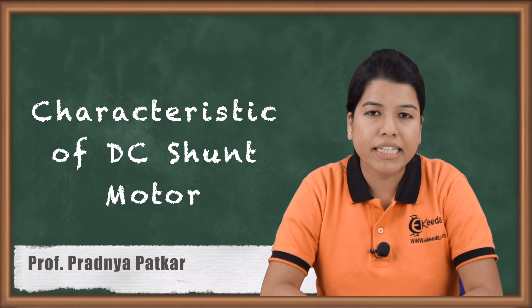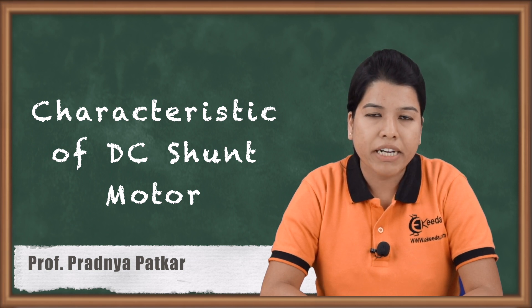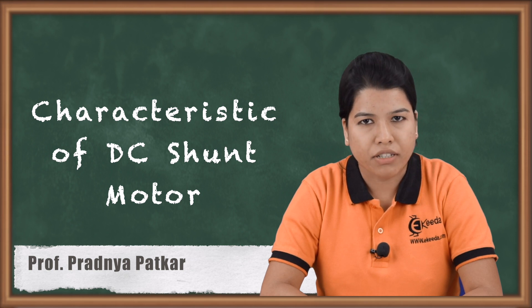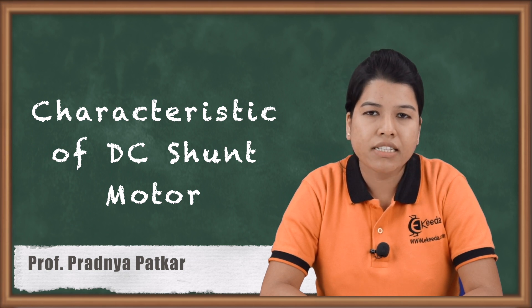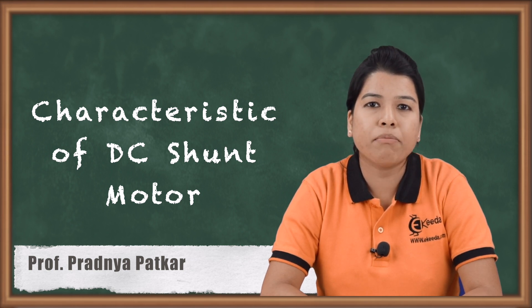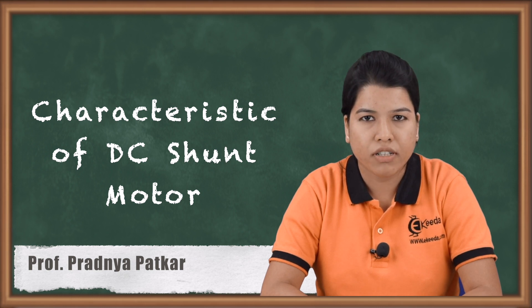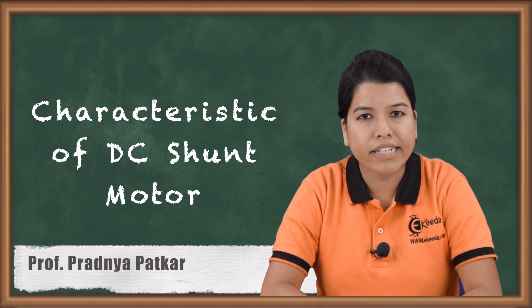Basically there are two characteristics: speed versus armature current and torque versus armature current. These characteristics are very important in determining the performance of a DC shunt motor. So let us study the characteristics of DC shunt motor.